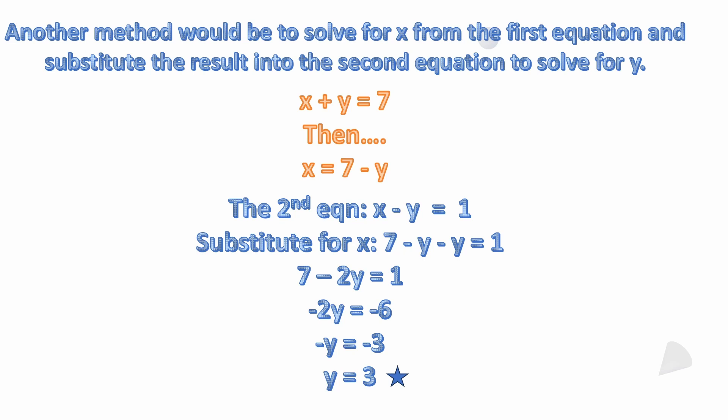Another way we could have approached it would be to solve for x from the first equation and then substitute that result into the second equation to solve for y. If we have x plus y equals seven, we can subtract y from both sides, which gives us x equals seven minus y. Then looking at our second equation, we substitute what we have for x — the second equation was x minus y equals one.